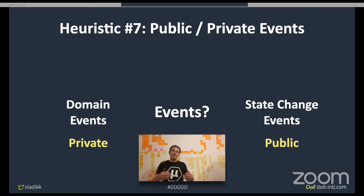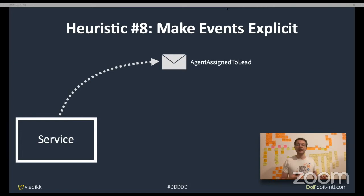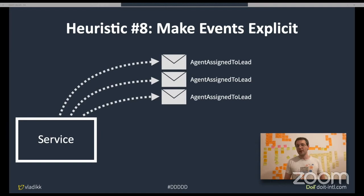You can have domain events inside a service but expose only state-changing events outside — keeping domain knowledge inside the service and minimizing its external interface. Heuristic 9: if you're exposing events as a service's public interface, make sure those events are explicit. For example, an 'Agent Assigned to Lead' event is implicit — if you receive three such events in a row, does it mean three agents are assigned, or should the last override the previous ones? This creates implicit coupling: clients must make assumptions about the business domain. Improve it by introducing an 'Agent Unassigned' event, or rename to 'Assigned Agent Changed' — both are much clearer and clients won't need to guess.